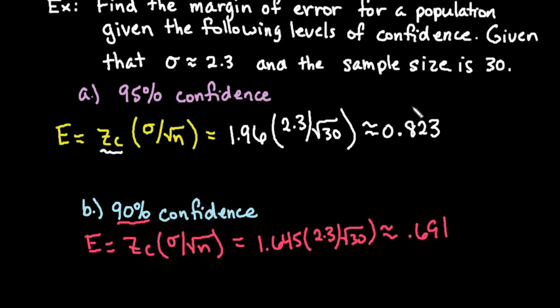If you notice, the margin of error is going to be larger for a larger level of confidence or higher level of confidence, and smaller for a lower level of confidence. 90% confidence gives us a smaller margin of error which means our interval would be a smaller estimate. The 95% confidence gives us a larger value.